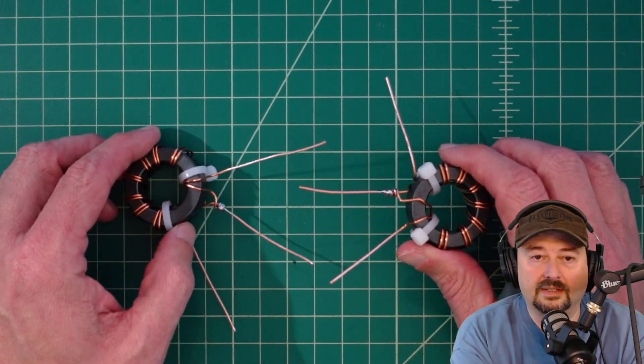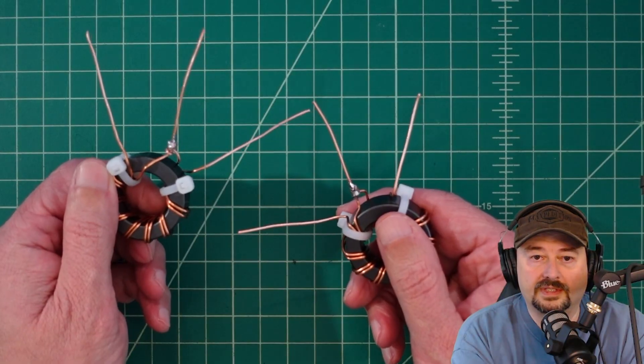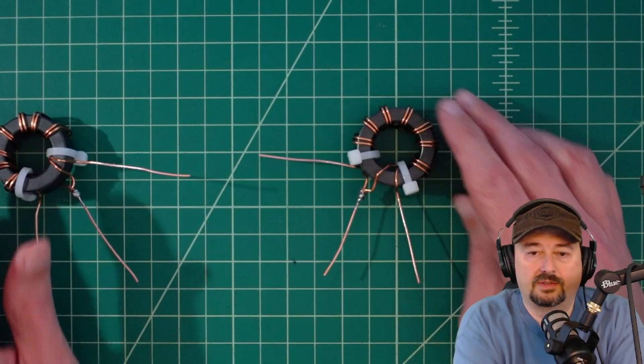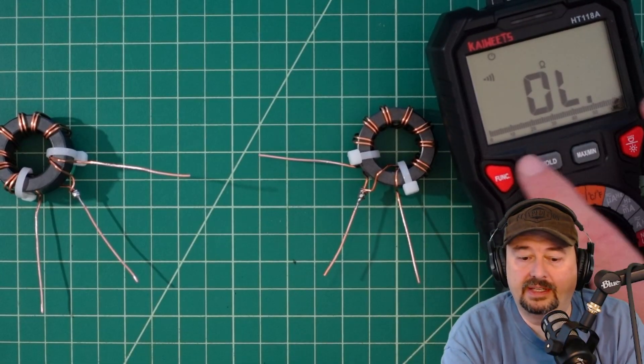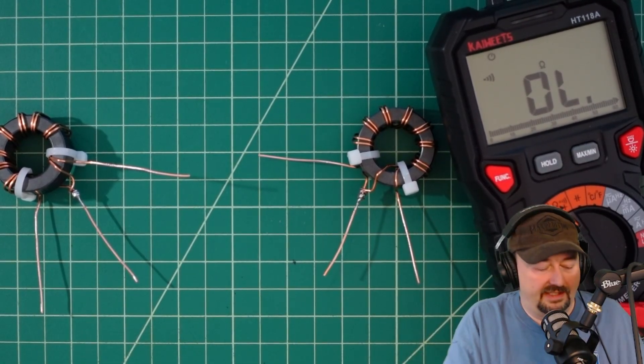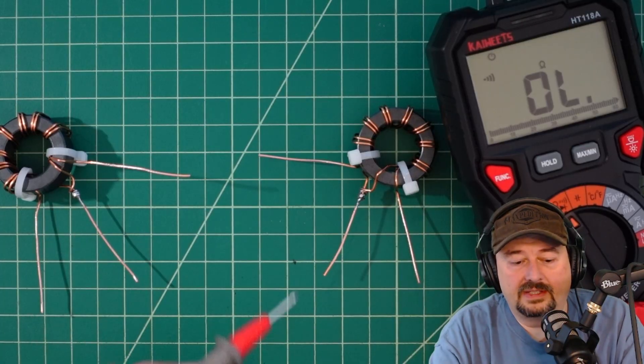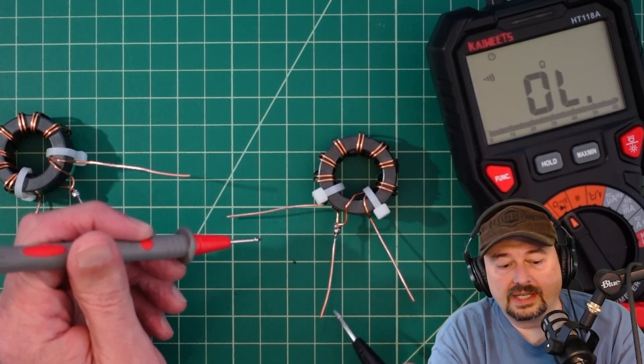You can see that we've soldered both of these cores. You can see a little bit of solder on there. What I want to do is a quick sanity check. I've got my multimeter and I have it set for testing continuity.